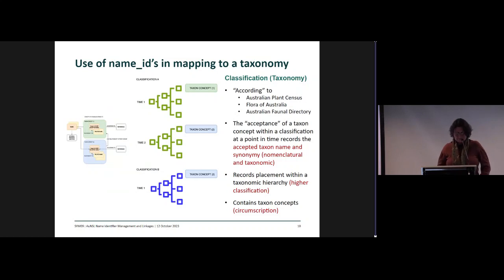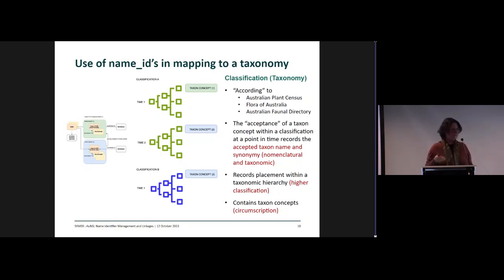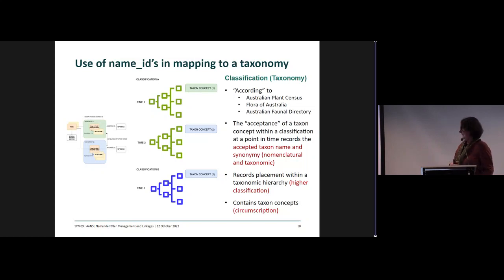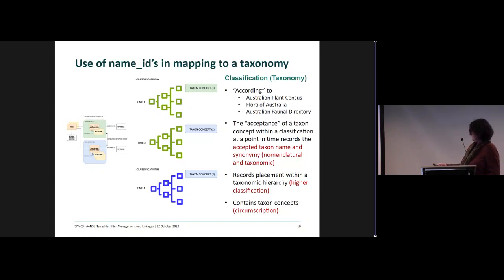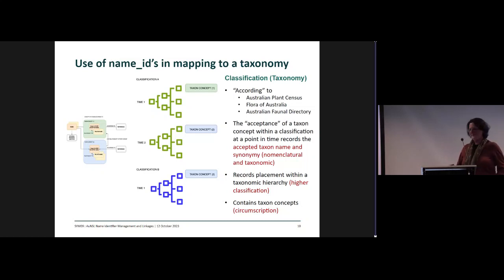The way we map that into a taxonomy is that the taxon concept — thinking of that fragment of accepted name and its synonymy as a taxon concept — the way we build a taxon classification is to attach that concept to a point in the tree at a point in time. Each time the tree is republished, that placement can change and shift. But we will always be able to resolve where a name is within that taxonomy at any point in time, including its children, its parentage, and its circumscription.